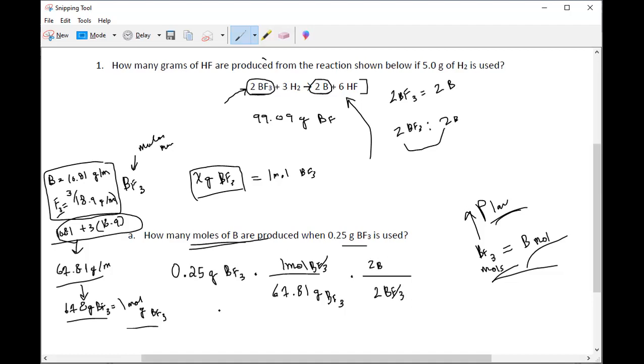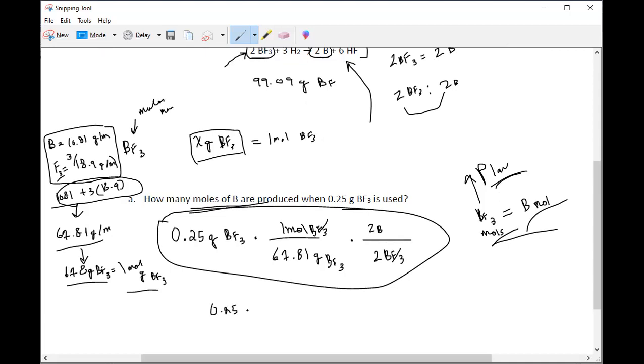If you were to go back and plug this into a calculator, what you would plug in is 0.25 multiplied by 1 over 67.81 multiplied by 2 over 2. You would effectively get 0.0036 or 37, depending on the decimal places that you considered. But 0.0036 moles of B would be your final answer.